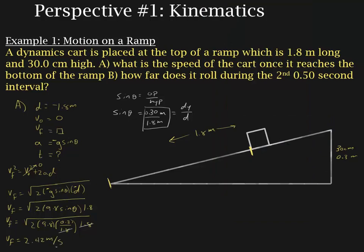Remember that the square root gives two possible answers, positive and negative. Since the block is moving to the left in this diagram, we would choose negative 2.42 m/s. It's also possible you drew the ramp so the block moves down and to the right — that would give positive 2.42 m/s. Often when you get a problem on a ramp they don't even ask for velocity; they just ask for speed. Speed is just the magnitude of the velocity, so basically ignore the minus sign.